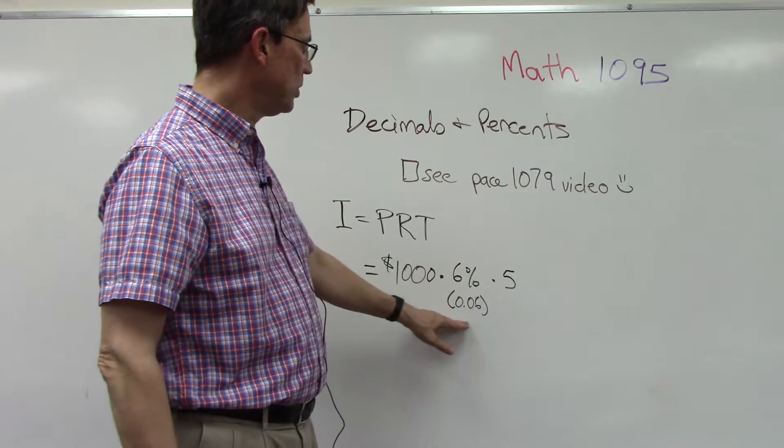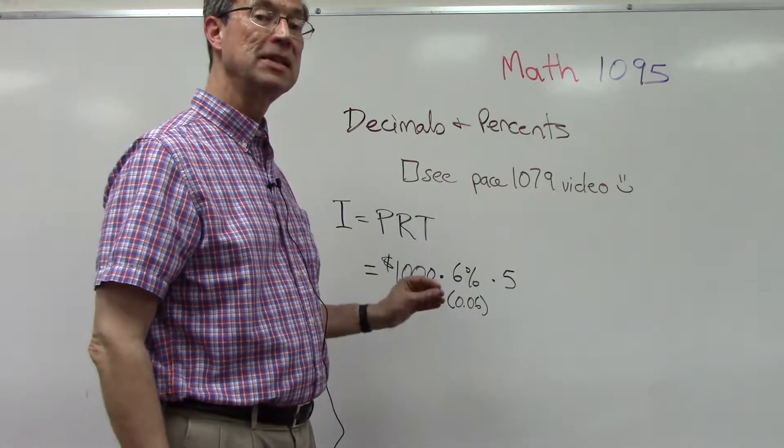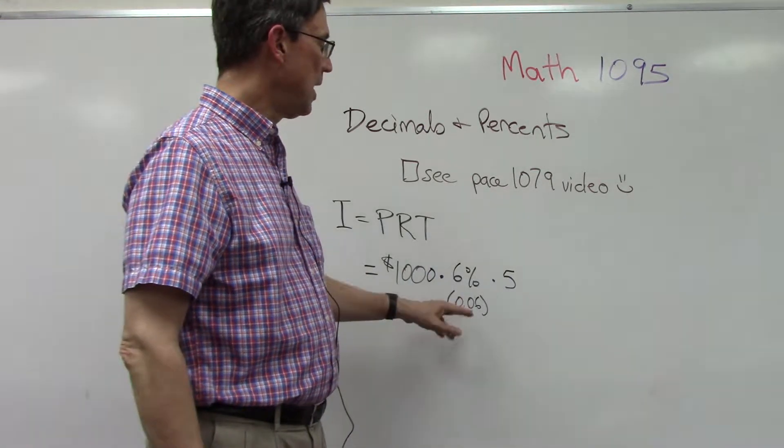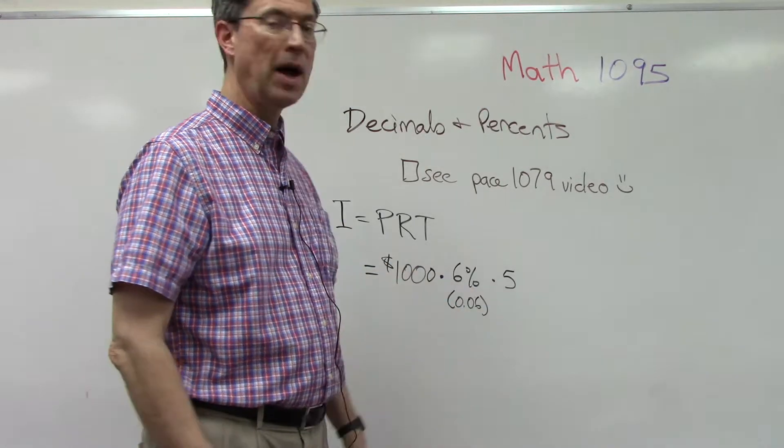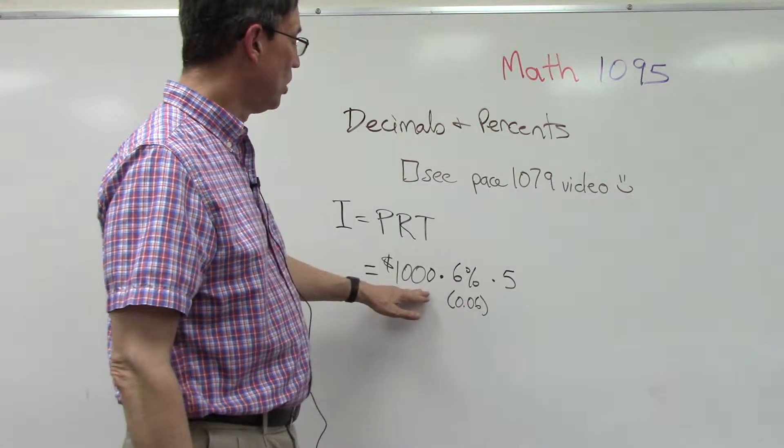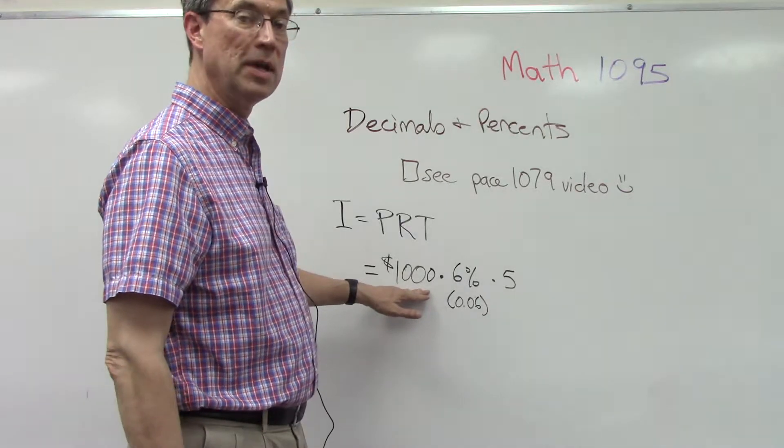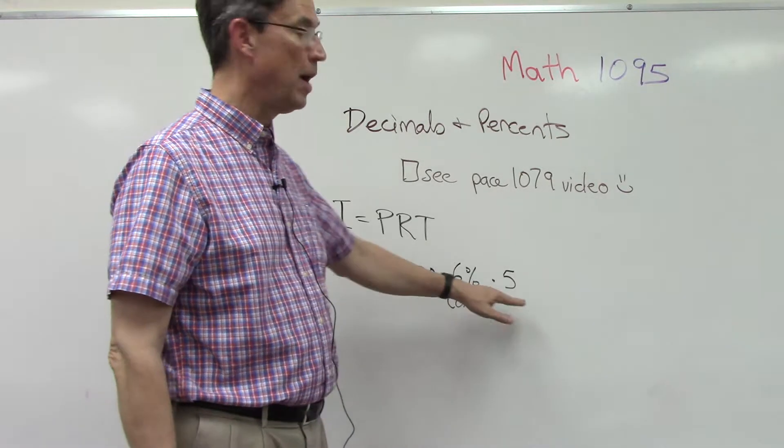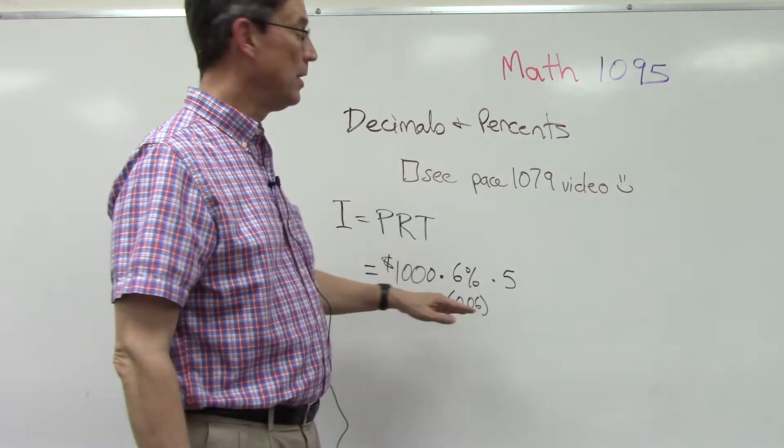So this becomes 0.06. When I multiply $1000 times 0.06, I get sixty dollars. Then sixty times five equals three hundred dollars.